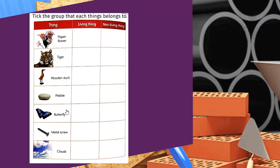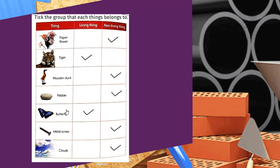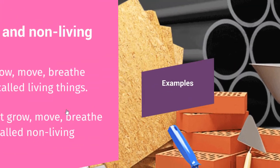After this discussion we will do an activity: take the group that each thing belongs to. Paper flour is a non-living thing. Tiger is a living thing. Wooden duck is a non-living thing. Pebble is a non-living thing. Butterfly is a living thing. Metal screw and clouds are non-living things.